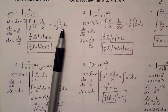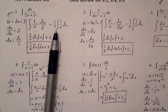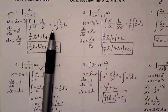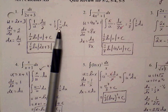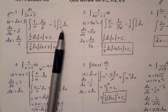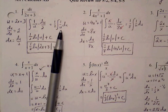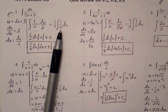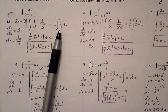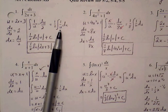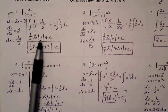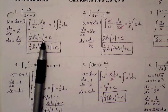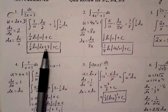Once we make the u-substitution, we need to check whether we have a rule for what's left in terms of u — all the x's must cancel out. In this case, the integral of 1 over u is a rule we know: natural log of the absolute value of u plus c. The one-half is a coefficient we keep out front, and the u value gets replaced back in terms of the original variable — 2x plus 3.